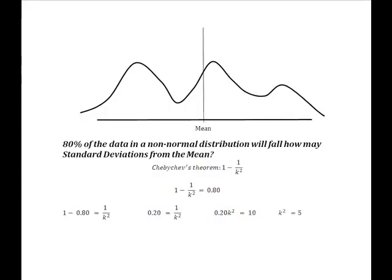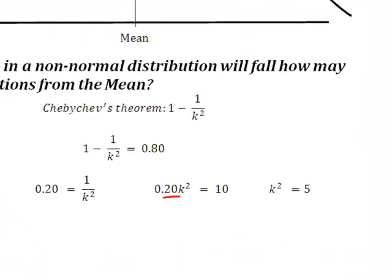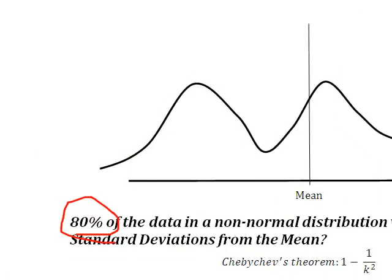I've divided both sides by 0.20, and 1 divided by 0.20 gives me 5. So k squared equals 5. But remember, what I need to know is the value of k — the number of standard deviations that contain 80% of the data in a non-normal distribution. So I'm now going to take the square root of both sides of the equation to give the magic answer for k.